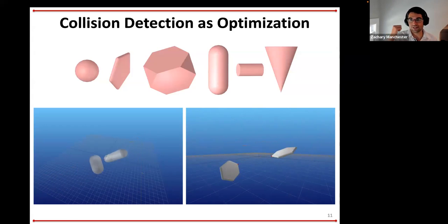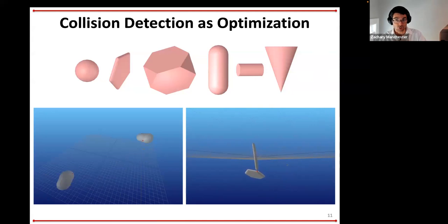We can do now collision detection, Coulomb friction, impact mechanics, and control, all as optimization problems. I'd say that's almost everything you need, probably just about everything.